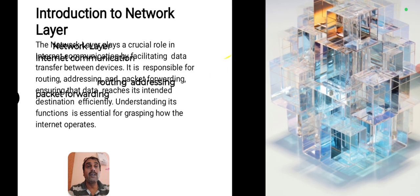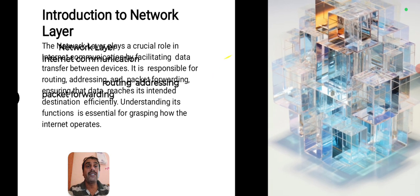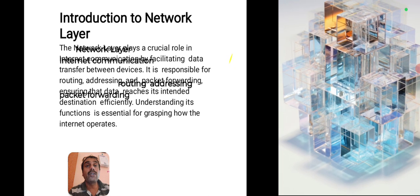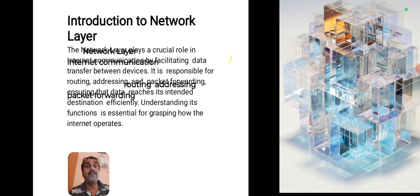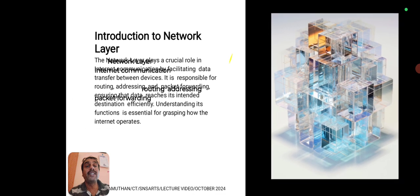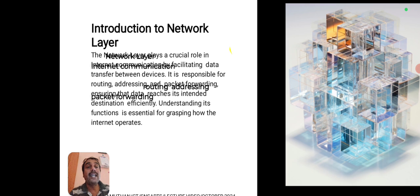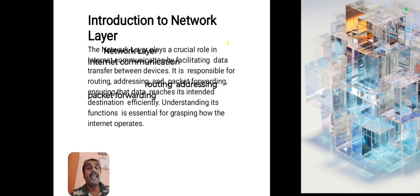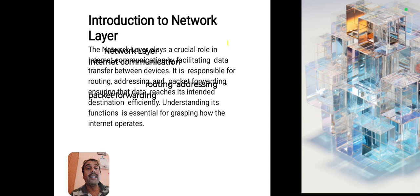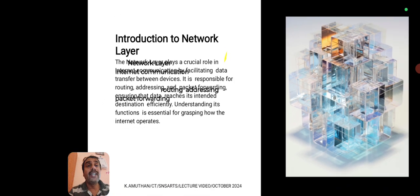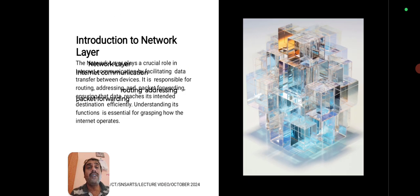Introduction to the network layer: the network layer plays a crucial role in internet communication by facilitating data transfer between devices. It is responsible for routing, addressing, and packet forwarding, ensuring that data reaches its intended destination efficiently. Understanding its functionality is essential for grasping how the internet operates.